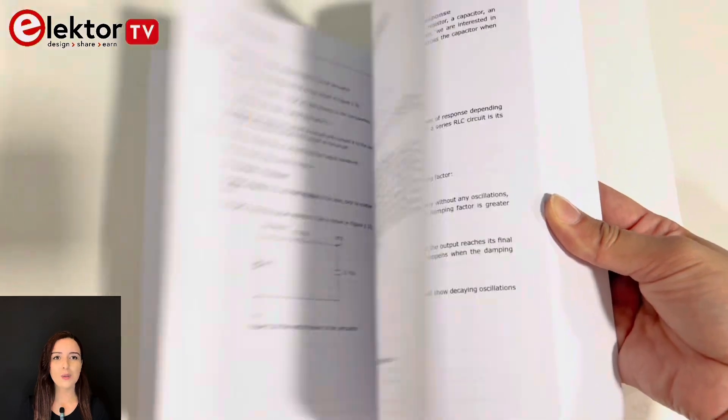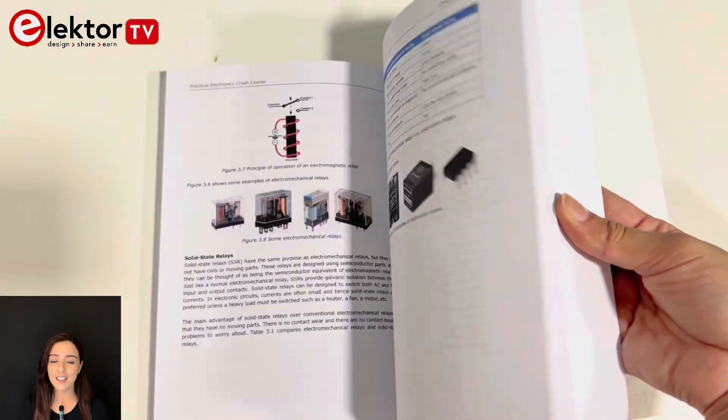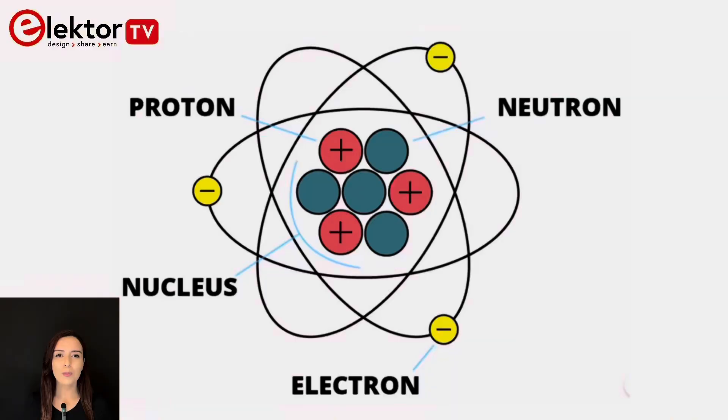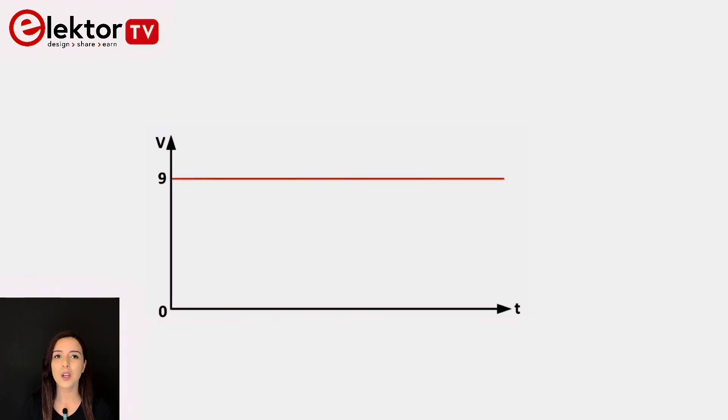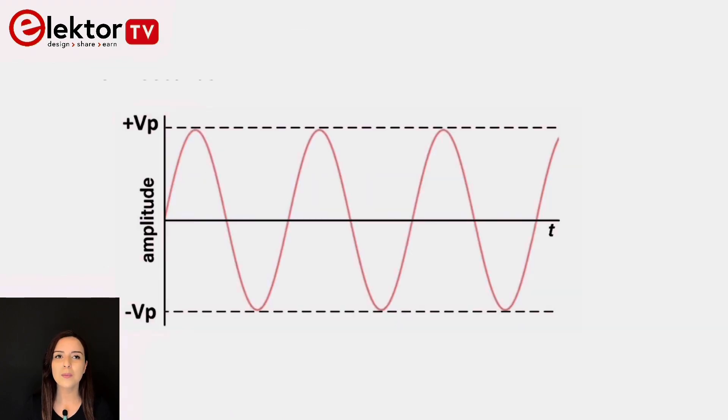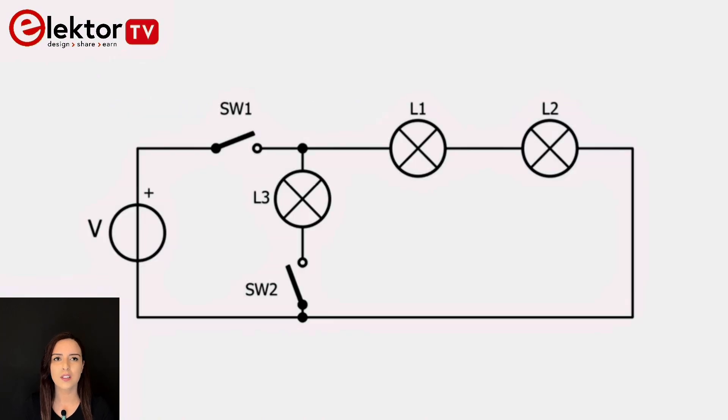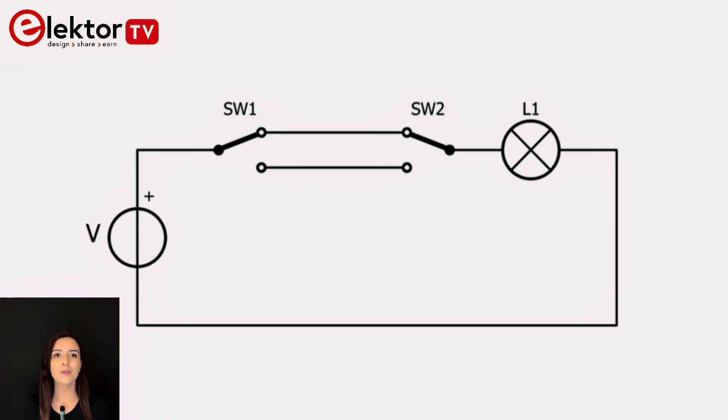The book is structured to take you from the basics to more advanced topics. Now let's review the chapters. The book begins with chapter one, electricity. Here you'll explore fundamental questions: what is electricity, what is voltage, what is current. This chapter sets the stage for understanding how electronic circuits function. You'll also learn about the differences between DC and AC and experiment with basic lamp and switch circuits.